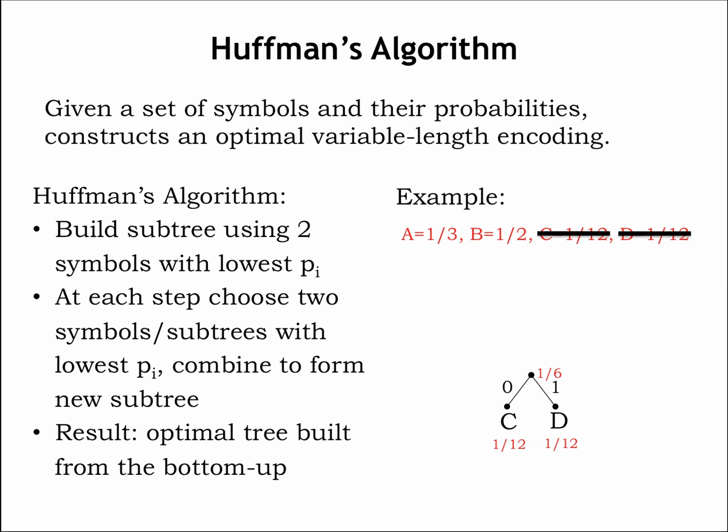Remove C and D from our list of symbols and replace them with a newly constructed subtree whose root has the associated probability one-sixth, the sum of the probability of its two branches.